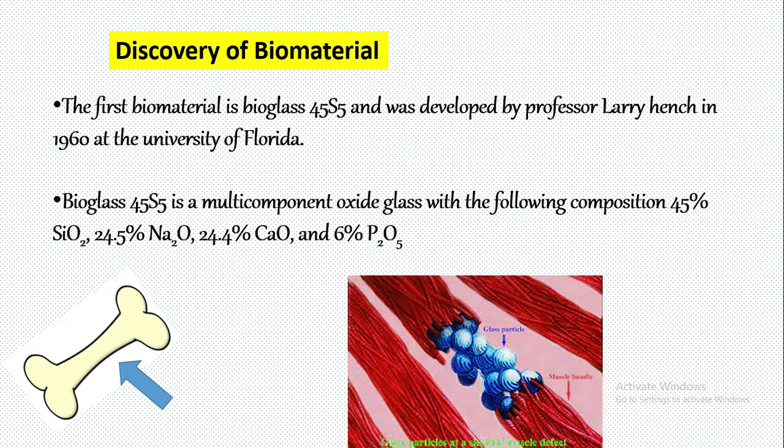The first biomaterial is Bioglass 45S5, discovered by Professor Larry Hench in 1960 at the University of Florida. It is a multi-component glass with the following composition: 45% SiO2, 24.5% Na2O, 24.4% CaO, and 6% P2O5.